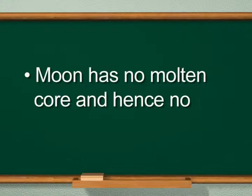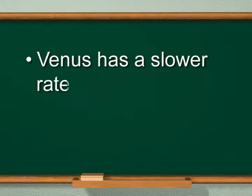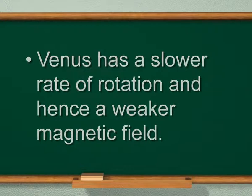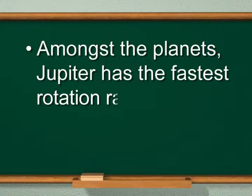This hypothesis is supported by these facts. First, the Moon has no molten core and hence no magnetic field. Second, Venus has a slower rate of rotation and hence a weaker magnetic field. Third, amongst the planets, Jupiter has the fastest rotation rate and it has a fairly strong magnetic field.